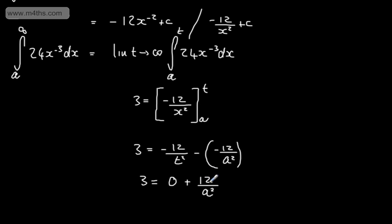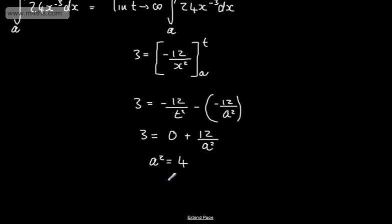So 3 will be equal to 0 plus 12 over A squared. Dividing both sides by 3 and multiplying both sides by A squared, A squared is going to be equal to 4. We take the square root, A is equal to plus or minus the square root of 4, which is 2. We're told A is greater than 0, therefore we have now A is equal to 2.